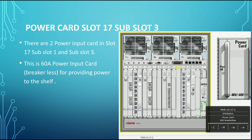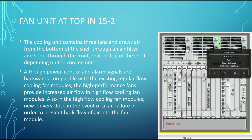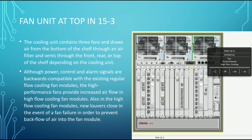There is also a power card in slot 17 sub-slot 3. The fan unit consists of three fan modules on the top of the shelf. The cooling unit contains three fans that draw air from the bottom of the shelf through an air filter and vent through the front, rear, or top depending on the cooling configuration. The high-performance fan module provides increased airflow. The three fan modules keep all the cards and slots cool. Fan units are in slots 15-1, 15-2, and 15-3.